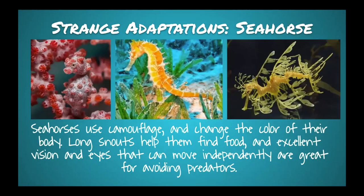A pygmy seahorse is totally adapted to its environment and matches the coral it lives in almost perfectly. On the far right is a leafy sea dragon, which lives amongst seaweed and blends in perfectly with its environment too. And then a classic seahorse in the middle.